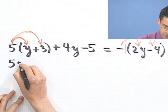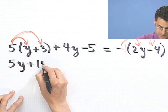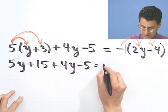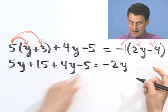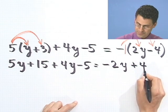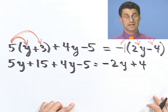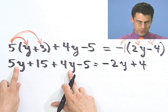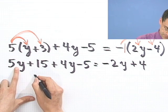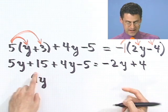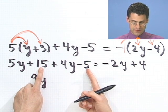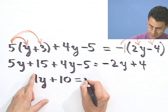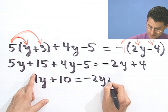We'd be at 5y plus 15 plus 4y minus 5 equals minus 2y, and then a minus times a minus becomes a plus 4. So that's what it looks like. Now what? Well, now I'm going to try to put all the y's together. So I have a 5y here and a 4y here. That's 9y. And let's see, I can combine these numbers. I have a 15 minus 5, which would be a plus 10. And that equals minus 2y plus 4.